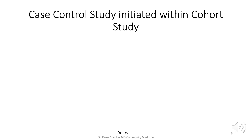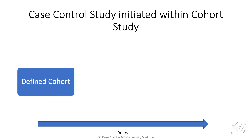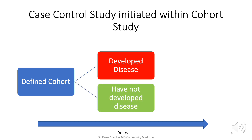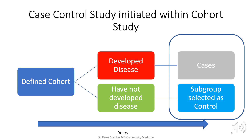In this type of study — a case-control study initiated within a cohort study — a population is identified and followed over time. This is called a defined cohort. The population is followed over a period of time and exposed to certain factors. Based on the cohort study, a few participants will develop the disease and a few will not. Those who developed the disease can be treated as cases, and controls are selected from those who did not. Such cohort-based case-control studies can be divided into two types.